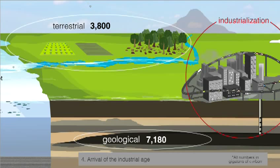Industrialization changed the landscape. Extracting and burning fossil fuels to power new modes of production and transportation had a direct impact on the carbon cycle.